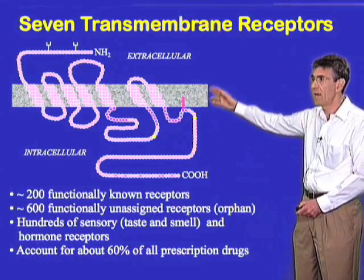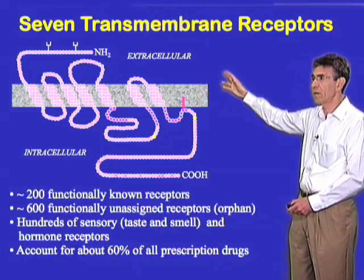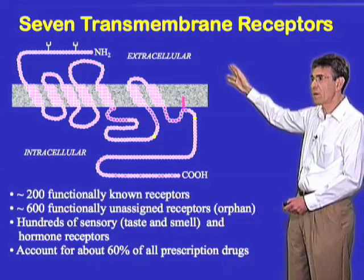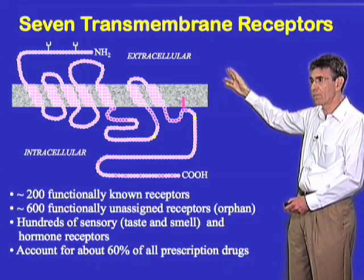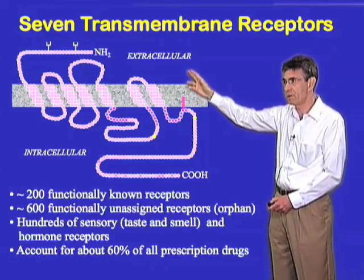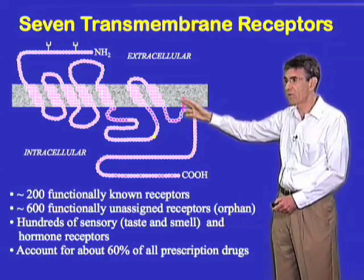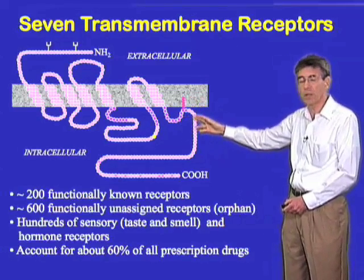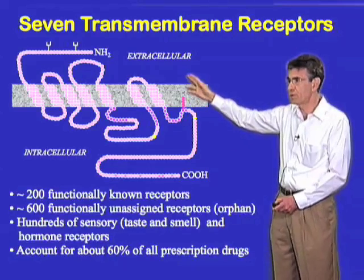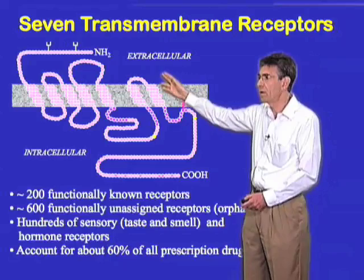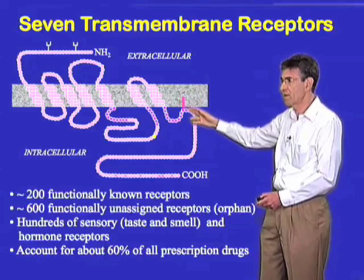Today I'm going to be talking about this remarkable family of seven transmembrane receptors, or G-protein coupled receptors, as they're also known. The name seven transmembrane receptor derives from their highly conserved structure, which features a polypeptide chain that crisscrosses the plasma membrane seven times.